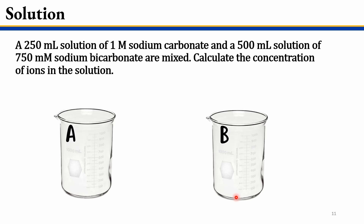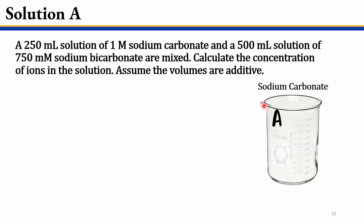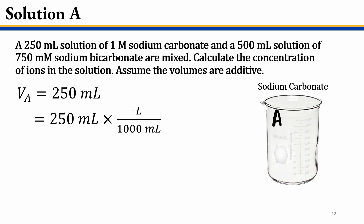I'm going to start by drawing some pictures. Here we have solution A, which I'll define as sodium carbonate, and here I have solution B, which I'll define as sodium bicarbonate. Starting with solution A: the problem states we have a 250 milliliter solution of one molar sodium carbonate. I'll define v sub A as 250 milliliters, and converting to liters by dividing by 1000, we get 0.25 liters.